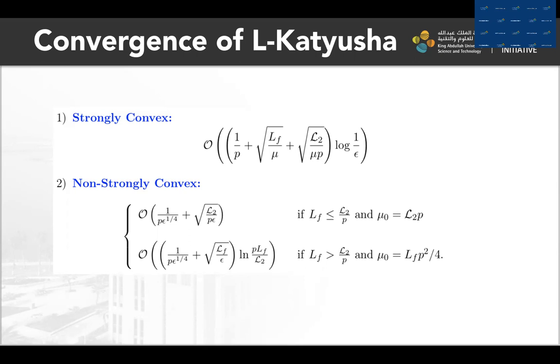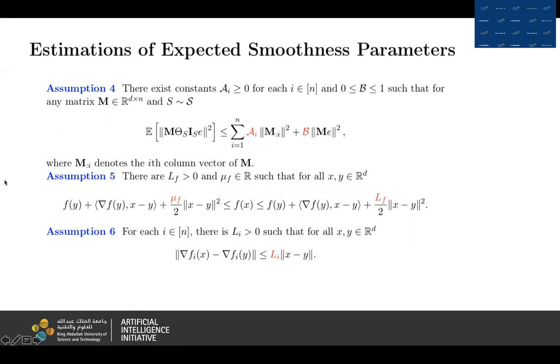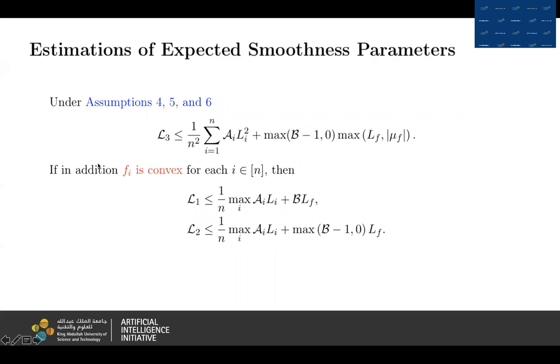And this is the convergence results for L-Katyusha. Next, we estimate the expected smoothness constants. The first assumption is related to the sampling. And the last two assumptions are actually the properties of F and Fi.